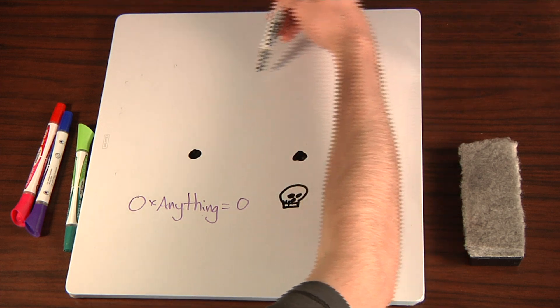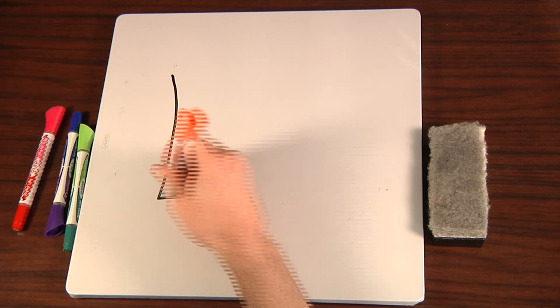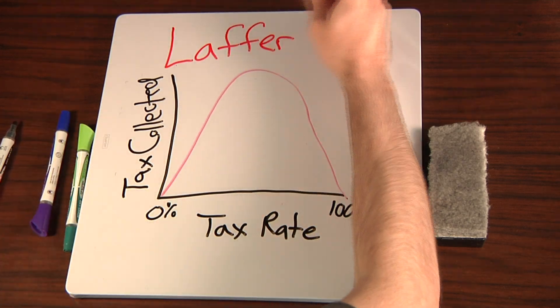So there's some point in between where tax revenue is maximized. I'll just draw it here for now. And then there's some curve passing through these three points. This is what is known as the Laffer curve.